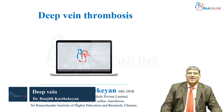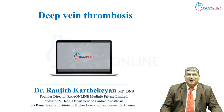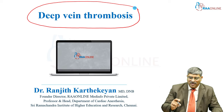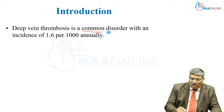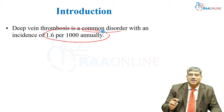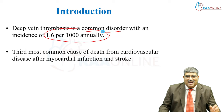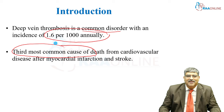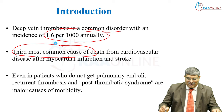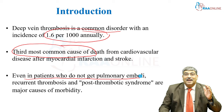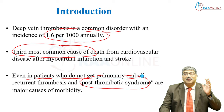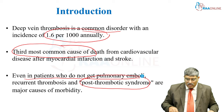Hi all, welcome to Raw Online. Today we are going to deal with one important complication which might affect morbidity as well as mortality — that is deep vein thrombosis. Why are you worried about deep vein thrombosis? It is a common disorder with the incidence of 1.6 per thousand annually. Among vascular disorders, it is the third most common cause of death after myocardial infarction and stroke. Even in patients who do not get pulmonary emboli, recurrent thrombosis and post-thrombotic syndrome may add to major morbidity. So DVT can be a significant cause of morbidity.